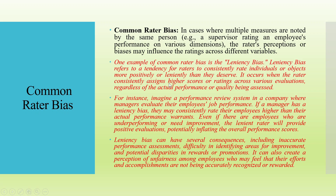Common rater bias occurs in cases where multiple measures are rated by the same person — for example, a supervisor rating an employee's performance on various dimensions. The rater's perceptions or biases may influence ratings across different variables. One example is leniency bias, which refers to the tendency for raters to consistently rate individuals or objects more positively than they deserve, assigning higher scores across various evaluations regardless of the actual performance or quality being assessed.